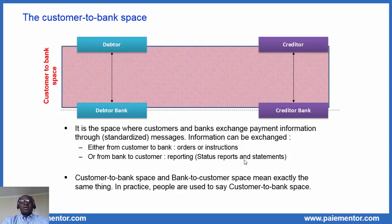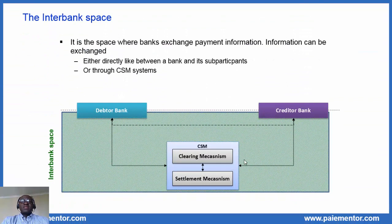Now, let's look at the interbank space. The interbank space, as the name suggests, is the space where banks exchange payment information. The payment information can be exchanged either directly — like between a bank and its sub-participants or indirect participants — or through a clearing system. When the banks go through a CSM, the CSM must first receive the payment message, process it, and then forward it to the receiving bank. The CSM generally requires banks to use specific message formats, in general adding a specific header to standardized messages.